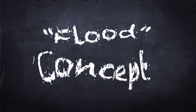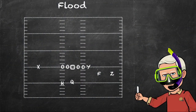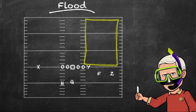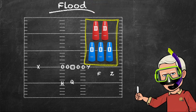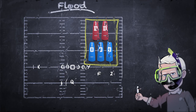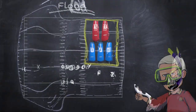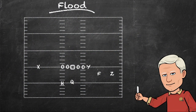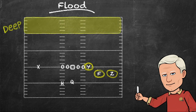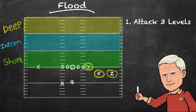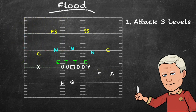Flood is a concept that attempts to put more eligible receivers into an area than there are defenders in coverage. It gets its name from its function — it floods an area of the field with the intent of putting more receivers in a zone than there are opposing players to defend it. It's typically run with three receivers to put the defense in conflict at a deep, intermediate, and short level. The goal is to put the defense in both a horizontal and a vertical stretch.